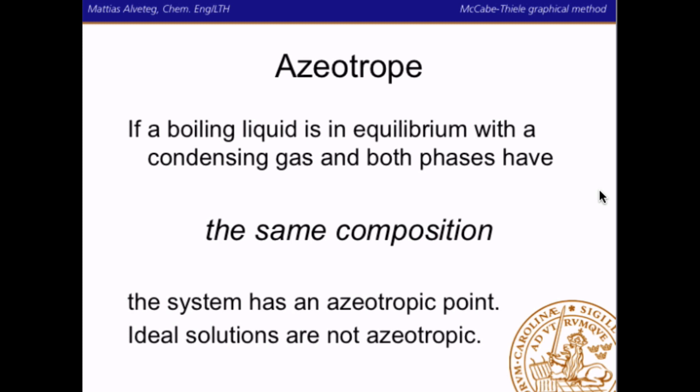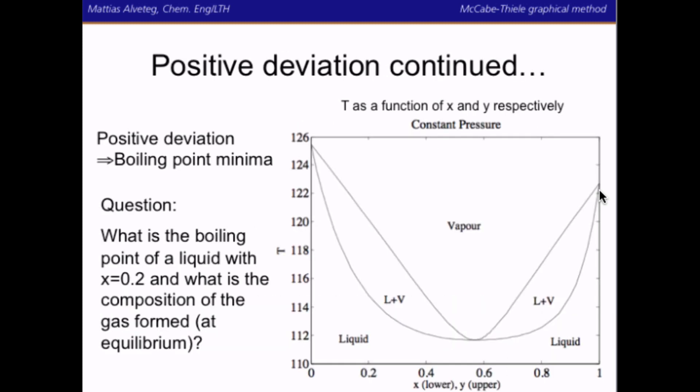Ideal solutions are never azeotropic. If we have positive deviation, we can get a boiling point minimum. Here is a question for you to ponder: what is the boiling point of a liquid with the molar composition 0.2 in the liquid phase, and what is the composition of the gas formed at equilibrium from that boiling liquid?